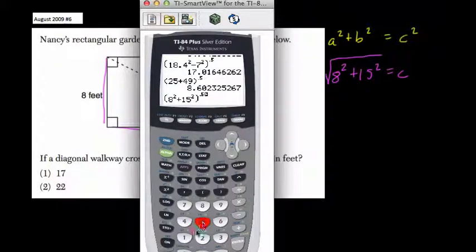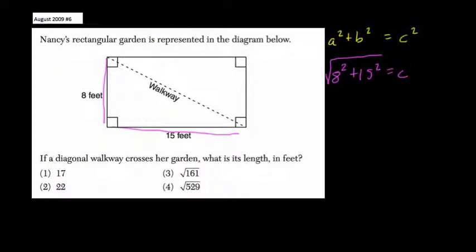Because we're taking the square root, that's the same thing as the half power. And we get our answer, 17. So c equals 17, and this is a Pythagorean triplet: the 8-15-17 triangle.